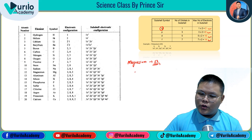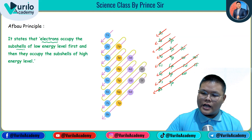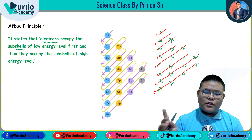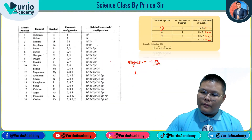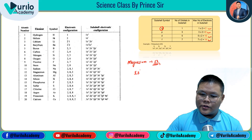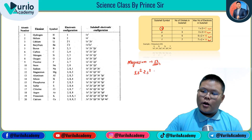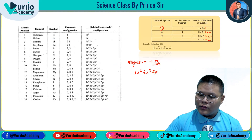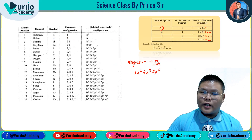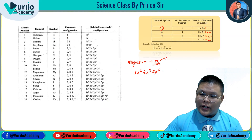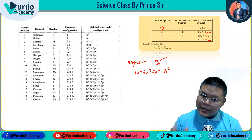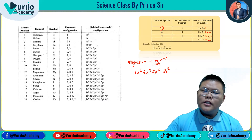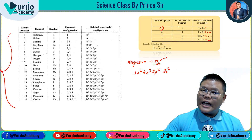For magnesium with atomic number 12, we follow the Aufbau order. We fill: 1s² (2 electrons), then 2s² (4 total), then 2p⁶ (10 total), then 3s² (12 total). So the electronic configuration of magnesium is 1s² 2s² 2p⁶ 3s². You need to know this pattern and practice it.